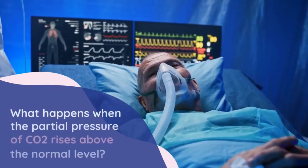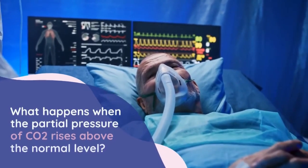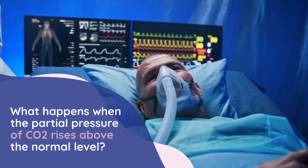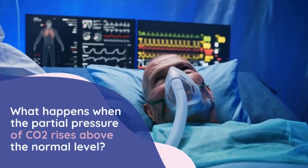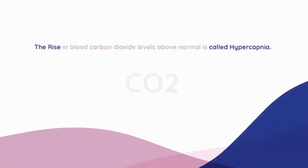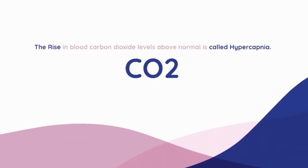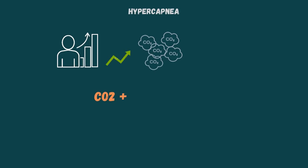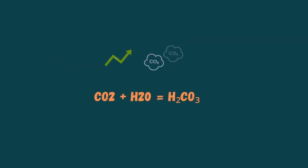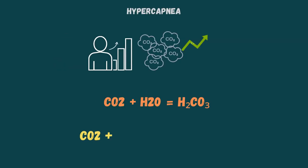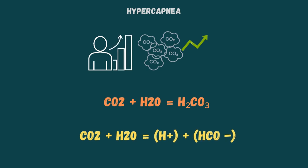What happens when the partial pressure of carbon dioxide, or CO2, rises above the normal level? The rise in blood carbon dioxide levels above normal is called hypercapnia. In hypercapnia, there will be a shift to carbonic acid in the presence of too much CO2, resulting in the formation of hydrogen cations and bicarbonate anions.